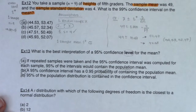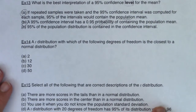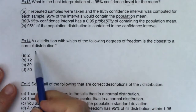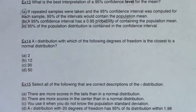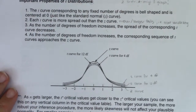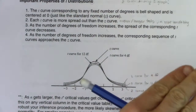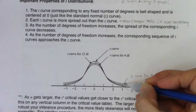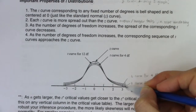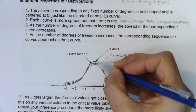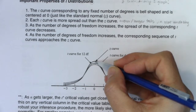Moving along, let's look at example 14: a T distribution with which of the following degrees of freedom is closest to a normal distribution? We talked about the T distribution — the fewer the degrees of freedom, the higher the tails, the more variable. At 4 degrees of freedom, the tail is very high. At 12 degrees of freedom it's lower, and then it converges toward the Z curve. So as degrees of freedom increase, your tails get shorter and shorter, and your peaks get taller and taller, converging to the standard normal curve.